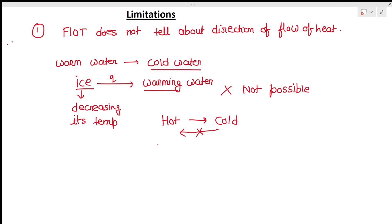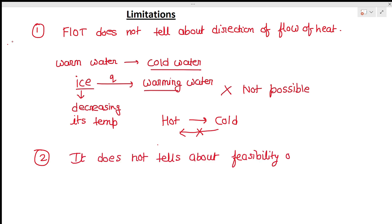The first law does not tell us about spontaneity — the naturally occurring processes that happen without any expenditure of energy. It also does not tell us about the feasibility of a reaction. For example, H₂ reacting with O₂ to form water — we cannot determine from the first law alone whether this reaction can happen naturally or not.